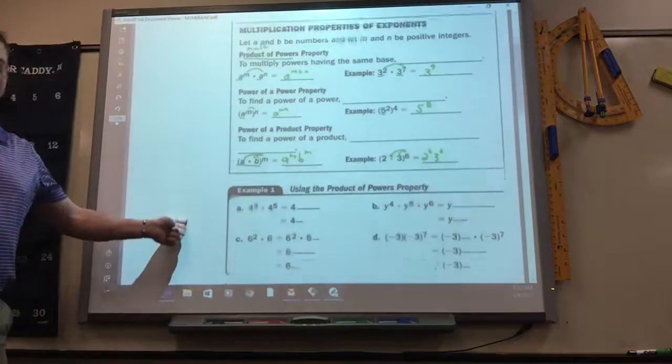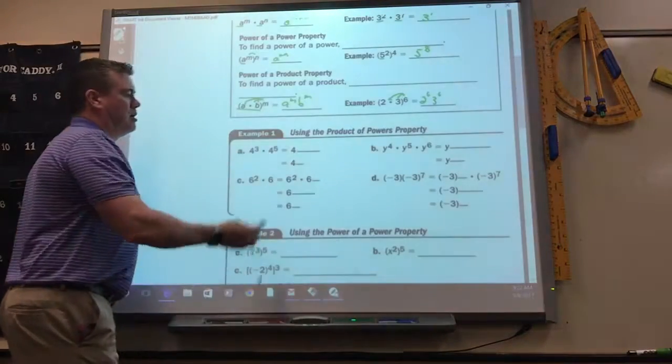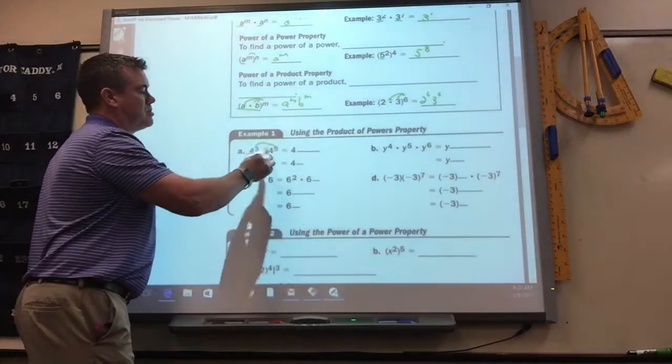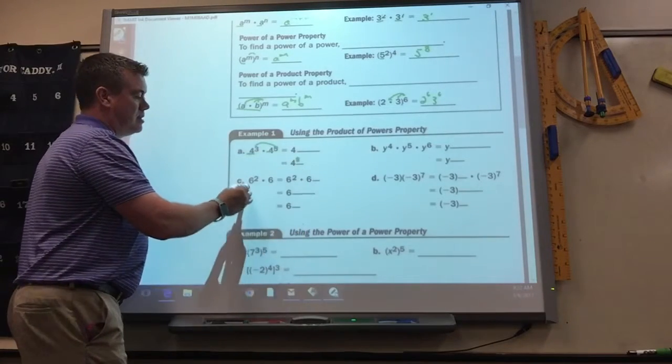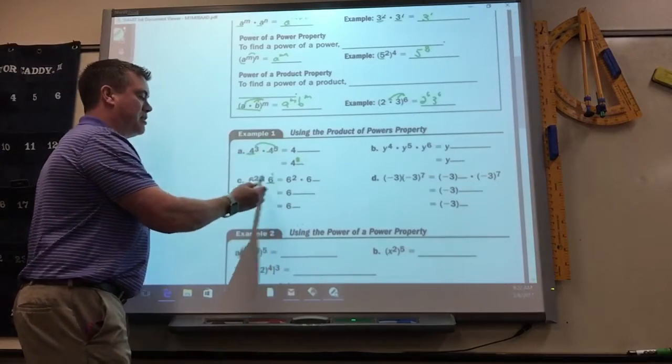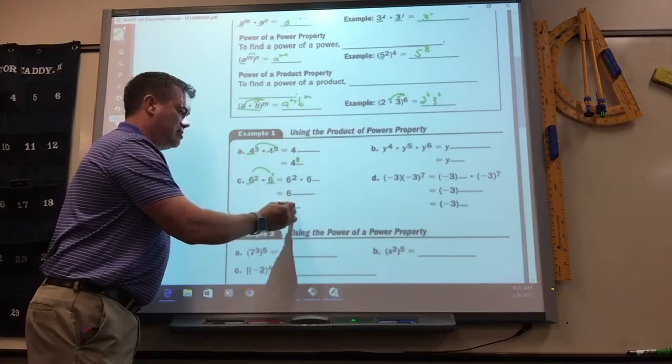So just going through, these are like the ones we did before. Same base, so you add them, it'd be 4 to the 8th. Same base, but remember if there's nothing there, it's a 1. So 2 plus 1 is 3, 6 to the 3rd.